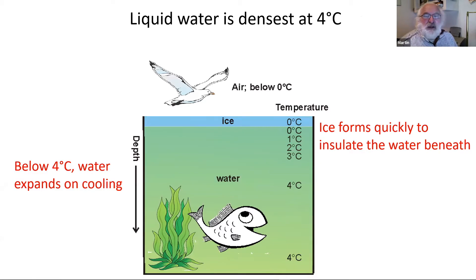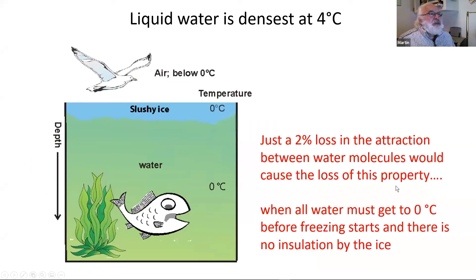If this didn't happen, and it only takes a two percent loss in the attraction between water molecules, then this effect would go. We wouldn't have that thing. And the whole of the pond or lake of water would have to freeze before you've got ice, slushy ice on the top. And again, to thaw you'd have to thaw the whole lot, not just the ice on the top.